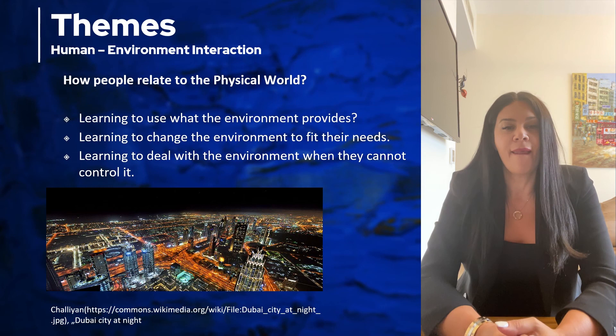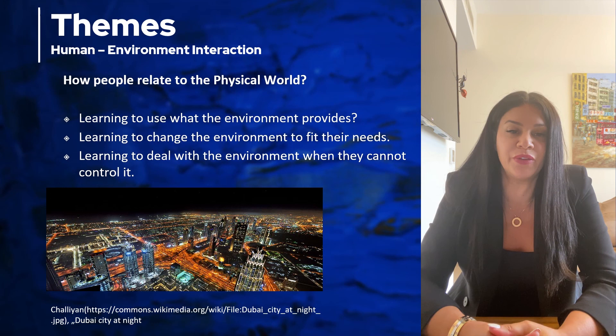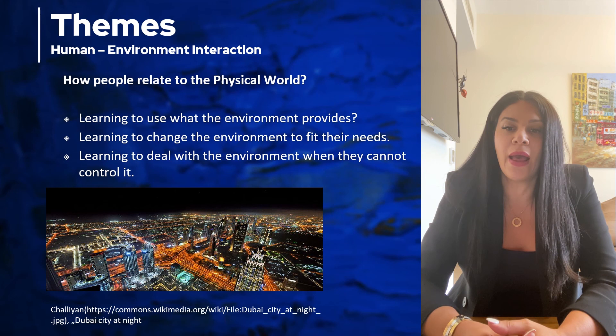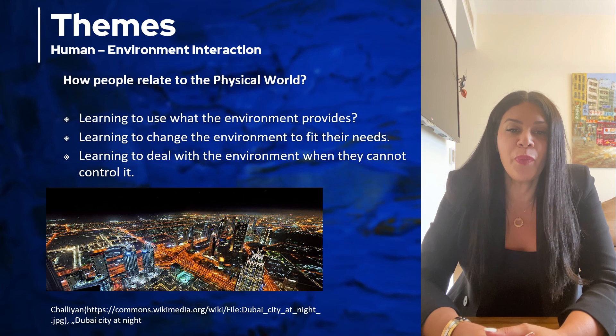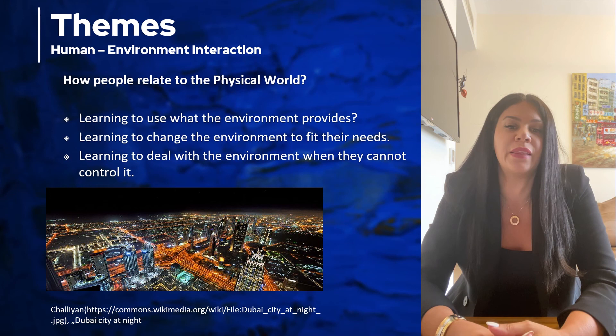Last, we have human-environment interaction. In this theme of geography, we ask what people shape and have been shaped by the environment, and how do they relate to the physical world. Human-environment interaction includes the facts of pollution and the overuse of resources. It also includes how people have made intentional changes to their environment, such as building dams, irrigation for agriculture, and the building of tunnels to support transportation.